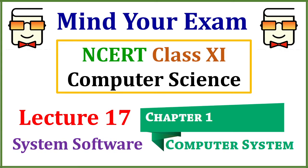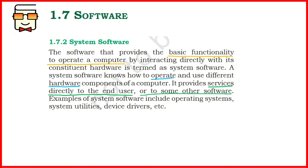Hello students, welcome to this channel. In this video we'll be studying about software — the types of software we discussed in the previous lecture. There were three main types: system software, programming tools, and application software. In this video we'll be studying in detail about system software. System softwares are the softwares that provide basic functionality to a computer — they form the soul of a computer system, without which a computer will not be able to operate. These softwares allow other hardware and additional software to provide their functionality.